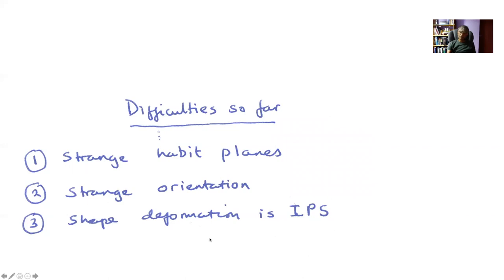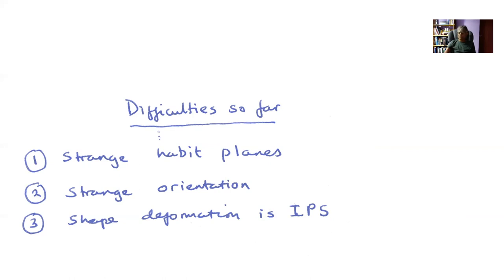We also demonstrated by experiment that the observed shape deformation is an invariant plane strain. That means it leaves a plane completely coherent between the martensite and austenite. I mentioned in passing that if I take that deformation and apply it to austenite it doesn't give me the correct crystal structure of martensite. So something is wrong here. We will prove that it is actually impossible to transform austenite into body-centered cubic or body-centered tetragonal martensite by a deformation which is an invariant plane strain. The best we can get is an invariant line strain, which leaves a single line unrotated and undistorted — in other words, coherent.